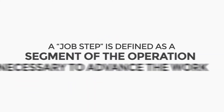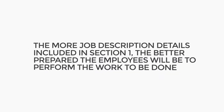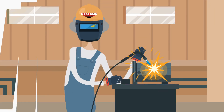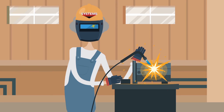A job step is defined as a segment of the operation necessary to advance the work. The more job description details included in Section 1, the better prepared the employees will be to perform the work to be done. A detailed job description also allows the supervisor to see where and when he or she may need particular pieces of equipment to perform the work safely and efficiently.